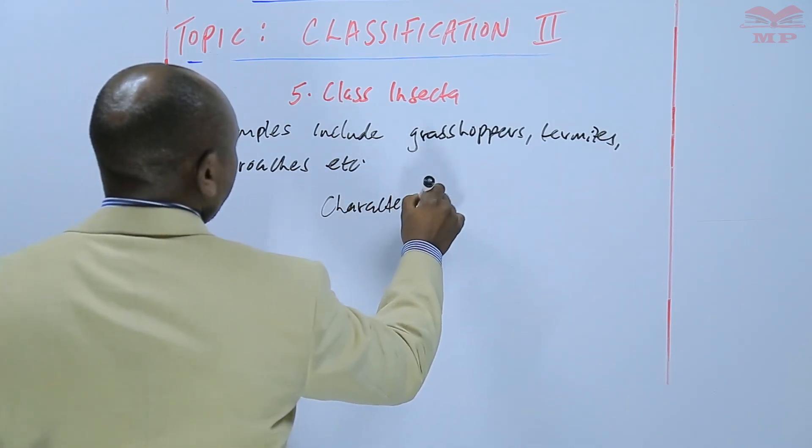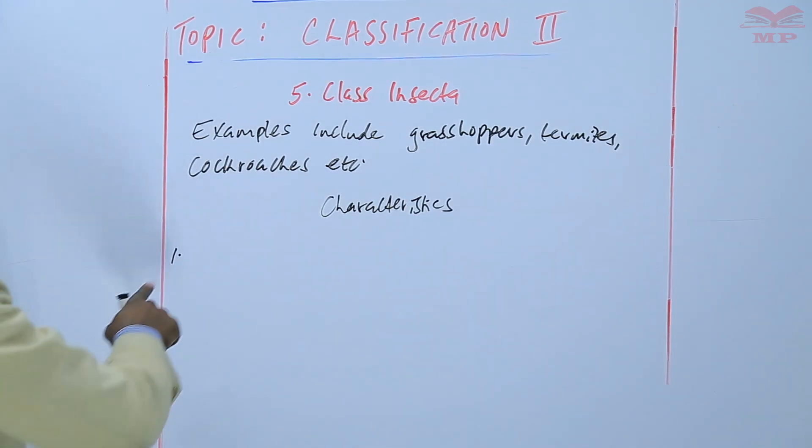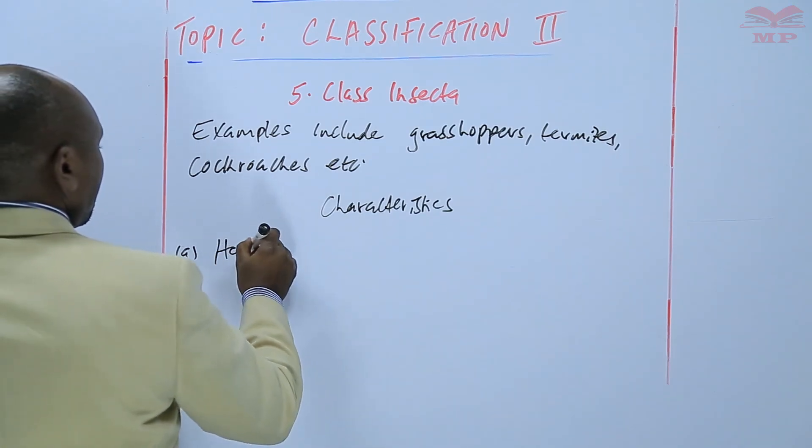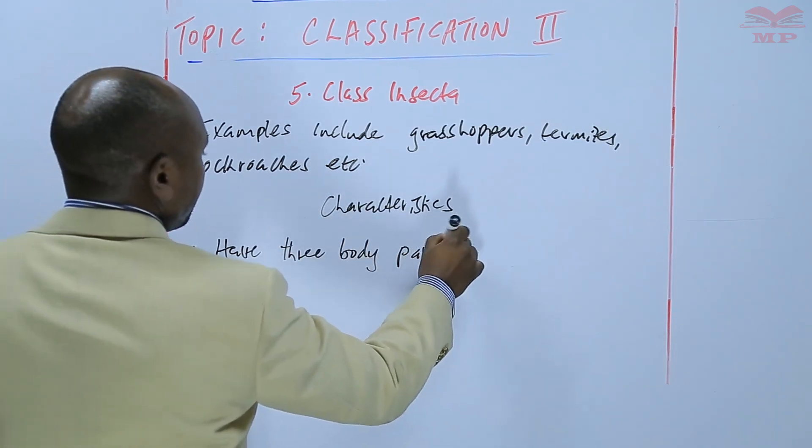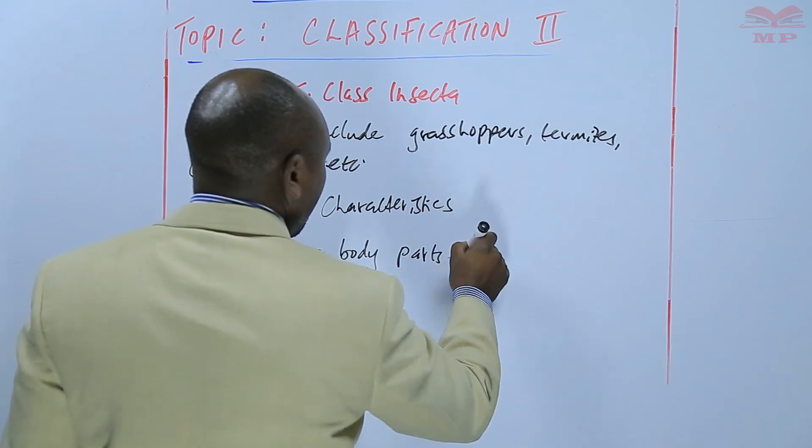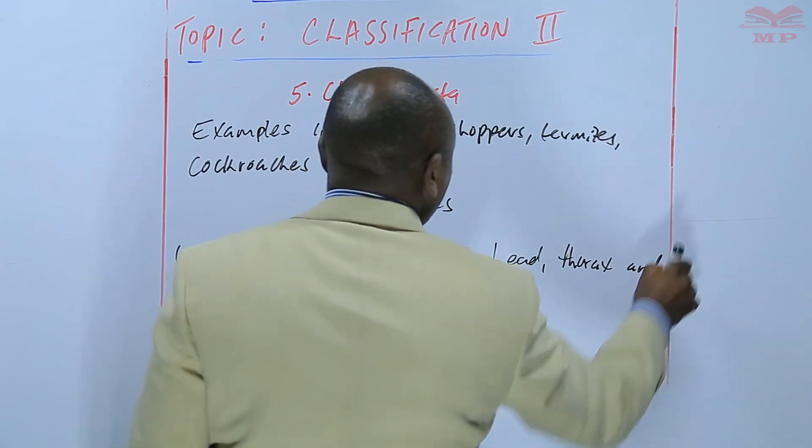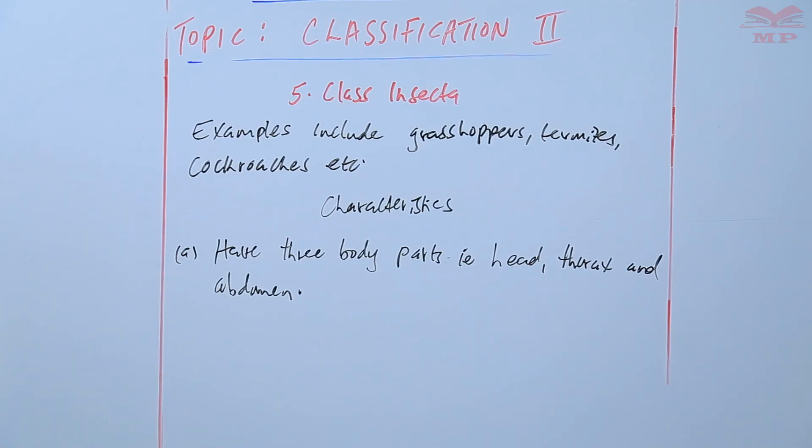One of the most unique characteristics of the class Insecta is that they have three body parts: the head, thorax, and abdomen. So basically the class Insecta, the members have three body parts as listed there, that is the head, thorax, and abdomen.